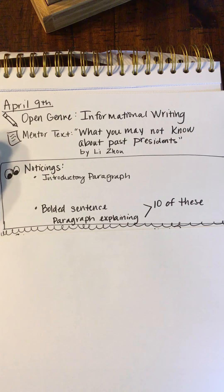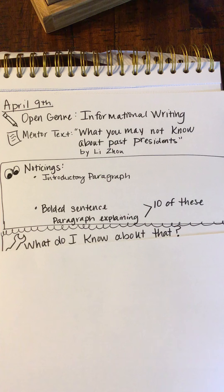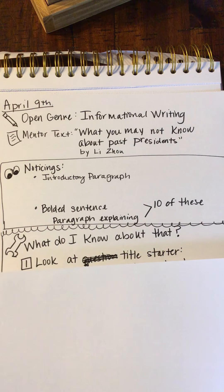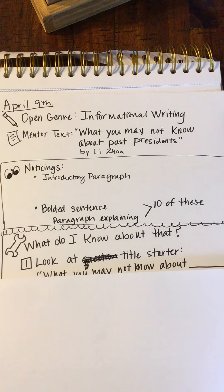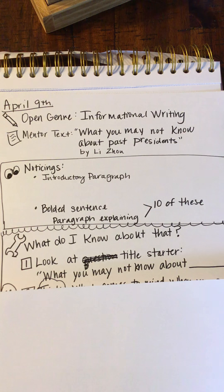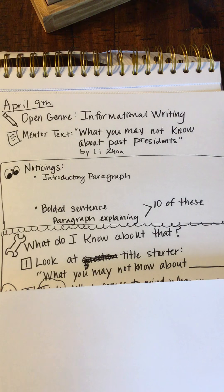All right, so we're doing open genre informational writing today — trying it out with mentor text noticings. We've got those things under our belt, so now what? What do I know about that? Let's use a strategy. Look at the title starter: 'What you may not know about blank,' and we give you some ideas as to what you could write about.